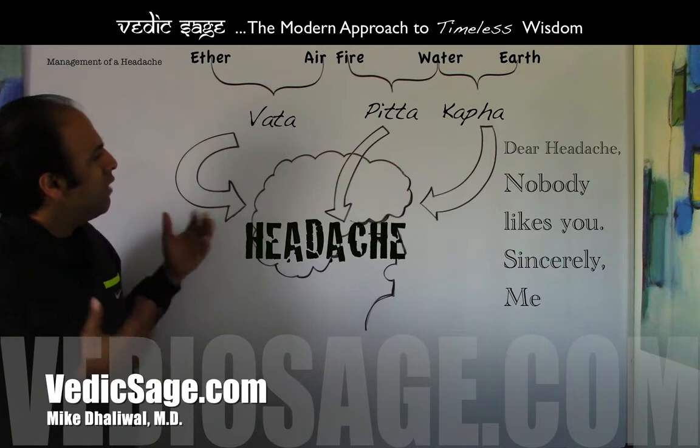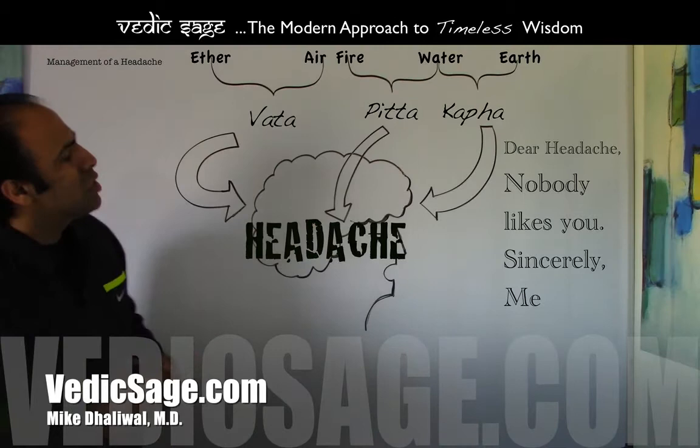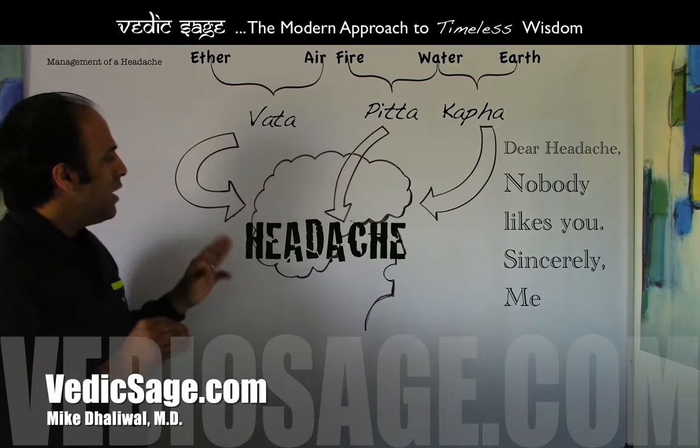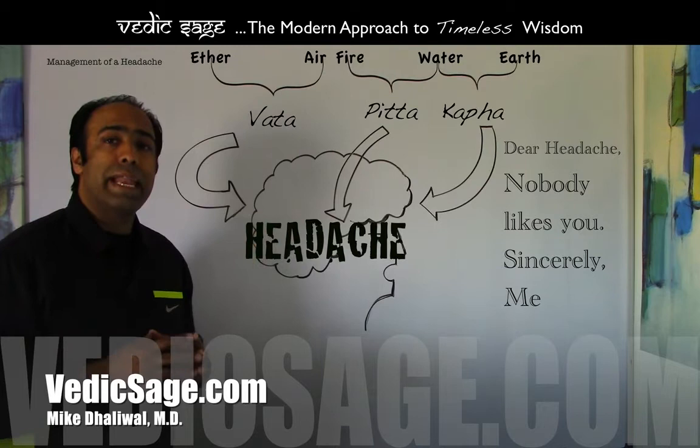Ayurveda looks at these conditions as being heavily influenced by three primary doshas: vata, pitta and kapha. For example, vata dosha is made up of two primary elements, ether and air, and has the qualities of dry, light, rough, cold, mobile and subtle. And if these qualities of vata become aggravated, they can affect other bodily tissues, for example the nervous system, leading to a vata type headache.